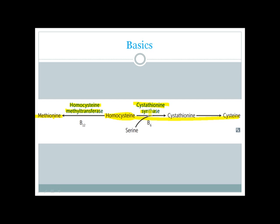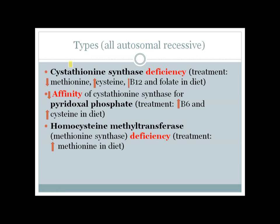Homocysteine combines with serine and forms cystathionine, which is later converted to cysteine. The conversion of homocysteine and serine to cystathionine requires a cofactor called vitamin B6, or pyridoxal phosphate. On the other pathway, homocysteine methyltransferase uses vitamin B12 — methylcobalamin — which donates a methyl group to homocysteine, enabling its conversion to methionine.